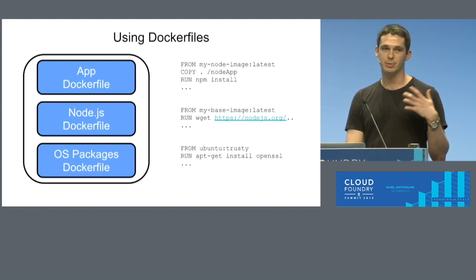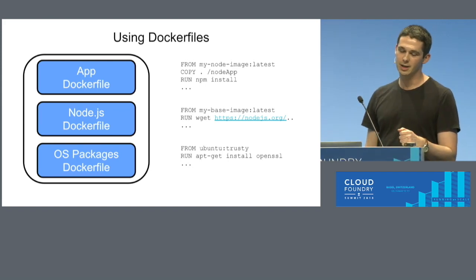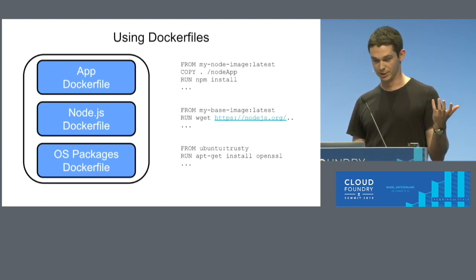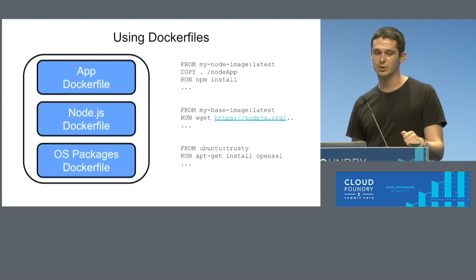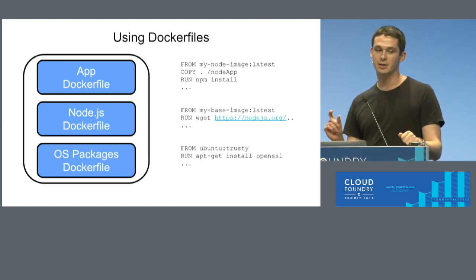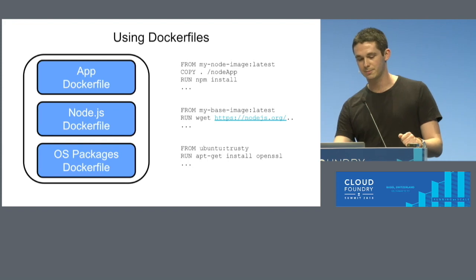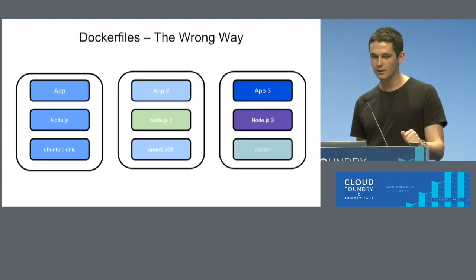At the OS layer at the bottom, we are installing any OS-level packages — maybe OpenSSL, maybe a MySQL connector. Then our next layer is going to install Node.js. Let's say we're using a Node app here. We're going to install Node.js, pull from that previous Dockerfile. And finally, on the top layer, we're going to install our app, run npm install. We have our running application, a nice Node app.